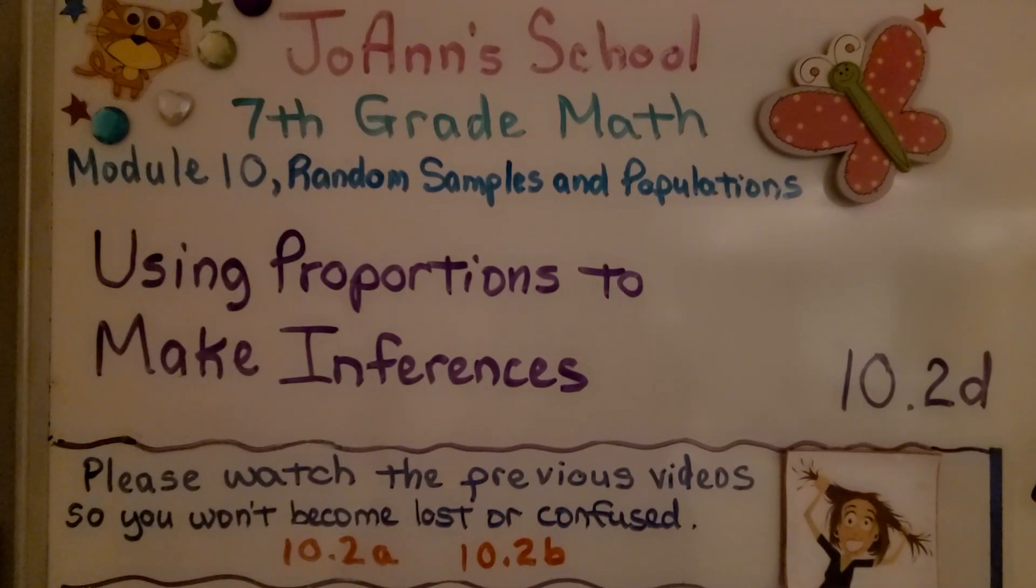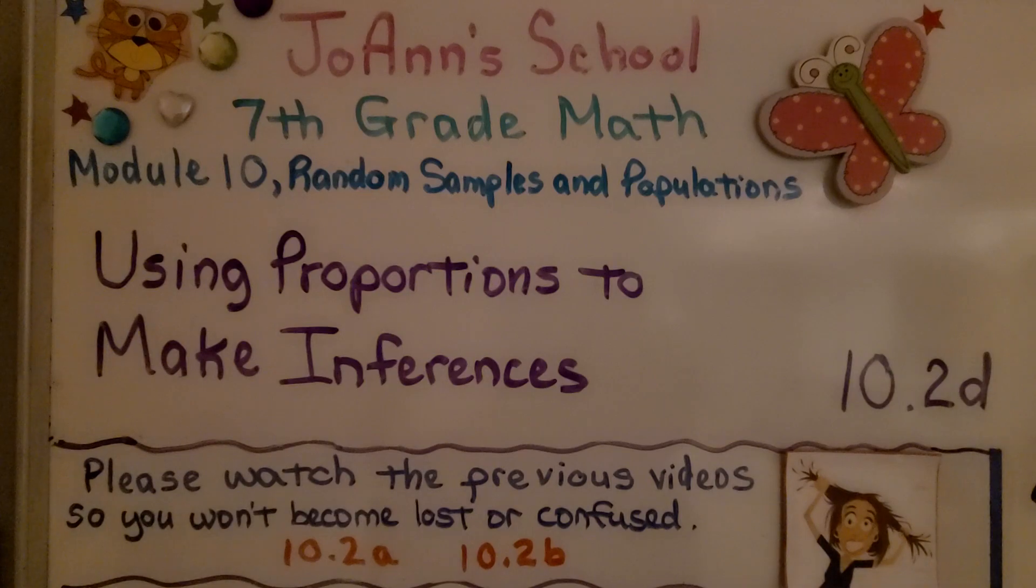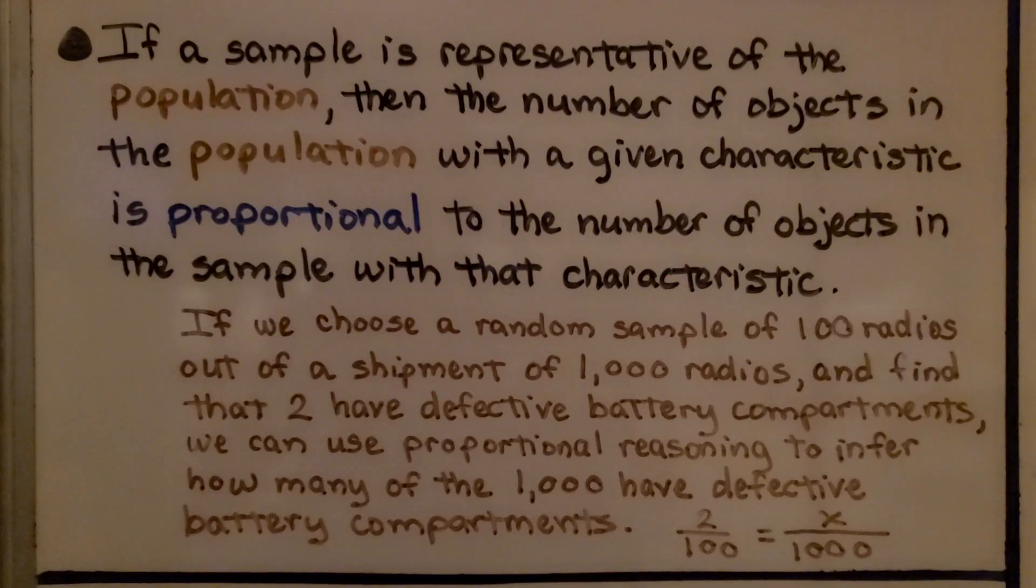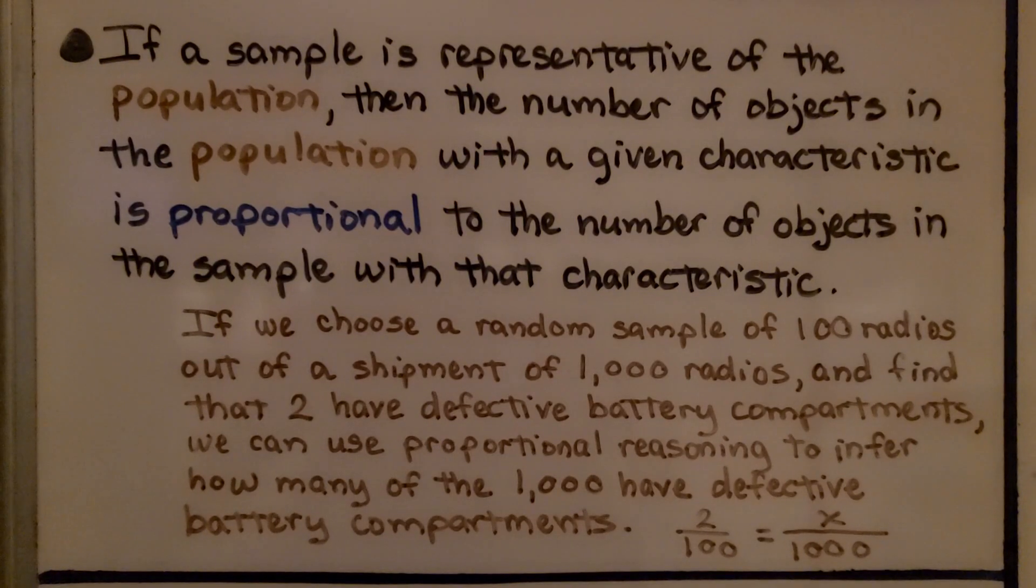Lesson 10.2d, Using Proportions to Make Inferences. If a sample is representative of the population, then the number of objects in the population with a given characteristic is proportional to the number of objects in the sample with that characteristic.